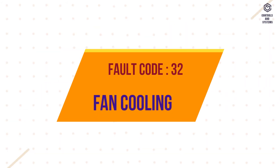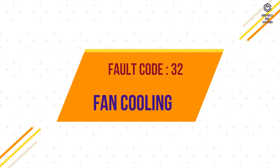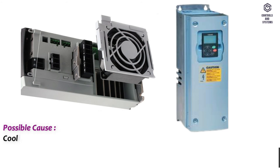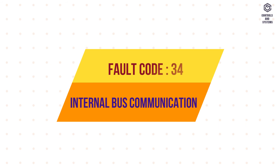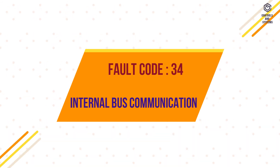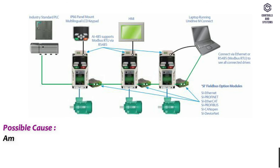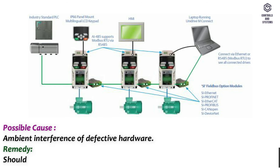Fault code 32 – Fan cooling fault. Possible cause: the cooling fan of the inverter does not start when the on-command is given. Remedy: contact technical support. Fault code 34 – Internal bus communication fault. Possible cause: ambient interference or defective hardware. Remedy: should the fault recur, contact technical support.